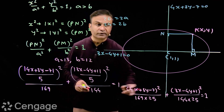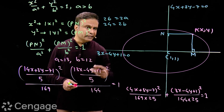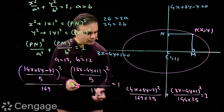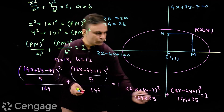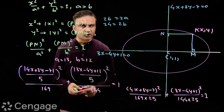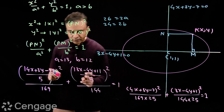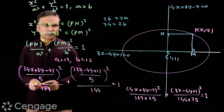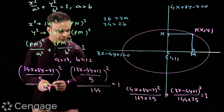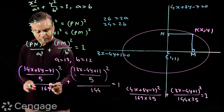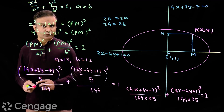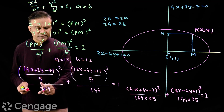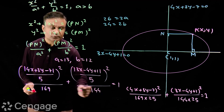Suppose you are given this ellipse equation and you have to identify the major and minor axes. We should convert this equation to the distance form — the PN and PM form. When we do that, the value of a² becomes 169 and b² becomes 144.